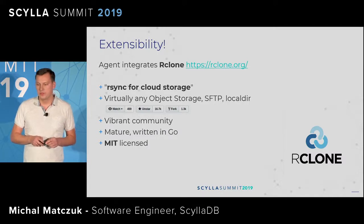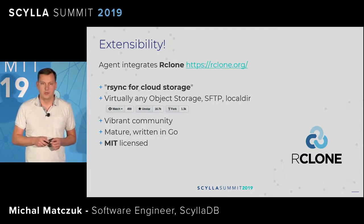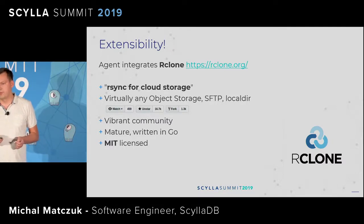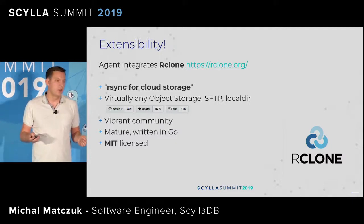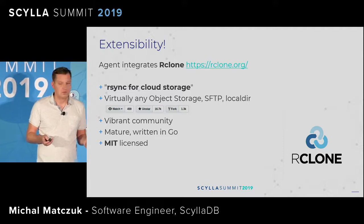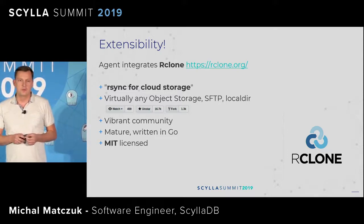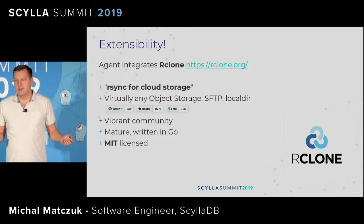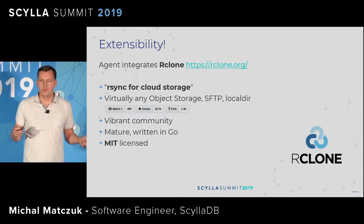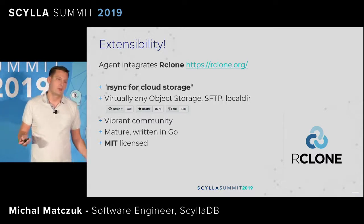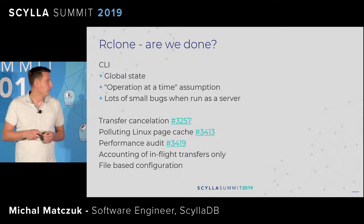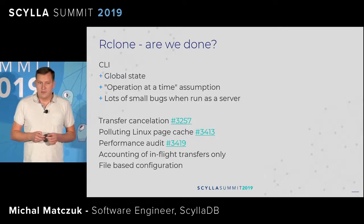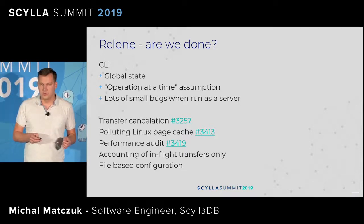We're able to back up to almost anything, thanks to integrating RClone in the agent. If you don't know RClone, I highly recommend checking it out — they describe it as rsync for cloud storage and support virtually any provider. It's a vibrant community: even before we shipped our version to QA, the changes we introduced to RClone were already pulled, merged, and tested by the community, and some issues were fixed. We did have to patch RClone to a certain degree to run it in server mode.